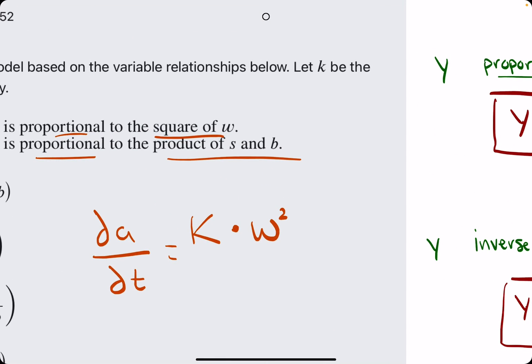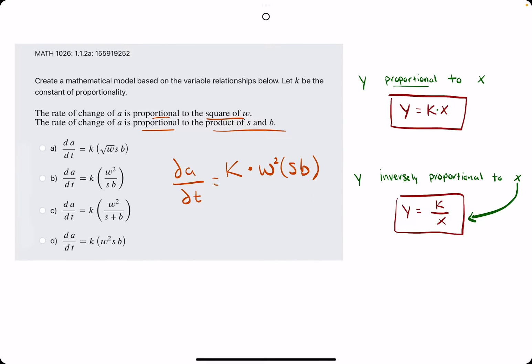We're going to multiply onto what we have already the product of S and B. The product meaning multiplication of S and B, so we could just call it SB to represent S times B.